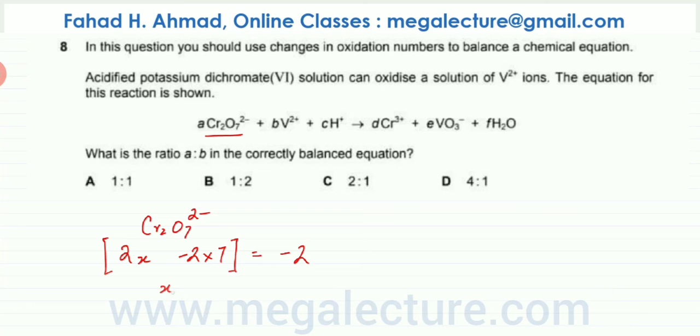So solve for X and X would come out to be, in this case it's coming out to be, taking -14 to the other side and then divided by 2, it comes out to be +6. Which means that chromium over here is +6.